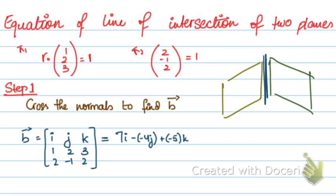So the direction vector of the line of intersection of these two planes will be 7, 4, and minus 5. That's step 1.